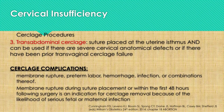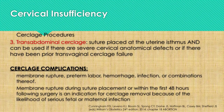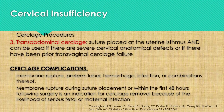We can also do a transabdominal cerclage, placing the suture on the uterine isthmus, which can be used if there are severe cervical anatomical defects or if there have been prior transvaginal cerclage failures. Complications of cerclage include membrane rupture, preterm labor, hemorrhage, infection, or combinations of these. Membrane rupture during suture placement or within the first 48 hours following surgery is an indication for cerclage removal because of the likelihood of serious maternal infection.